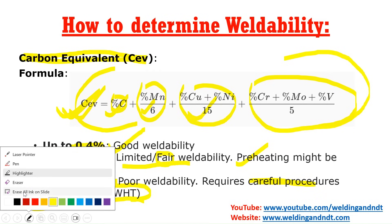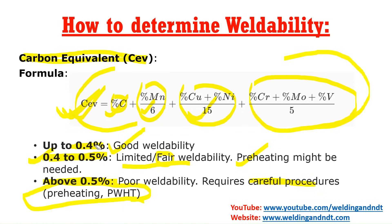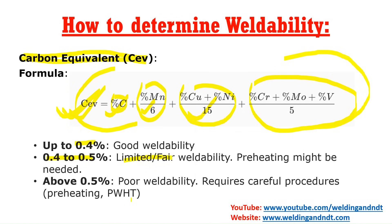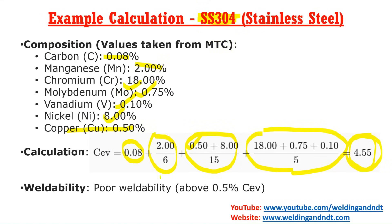Looking at the criteria: up to 0.4 is good weldability, 0.4 to 0.5 is limited or fair, and above 0.5 is poor weldability. SS304's carbon equivalent of 4.5 is very far from 0.5, meaning SS304 has very poor weldability. It is very hard to weld — a normal welder who can weld mild steel may feel difficulty welding SS304.